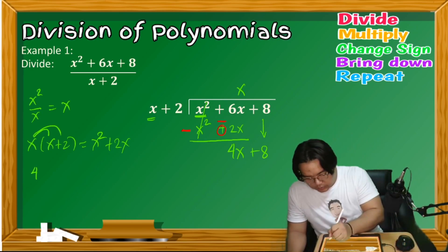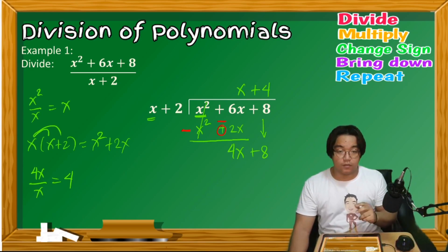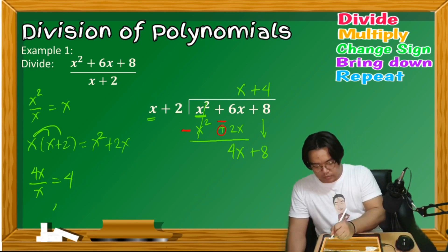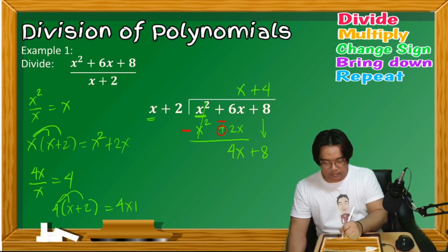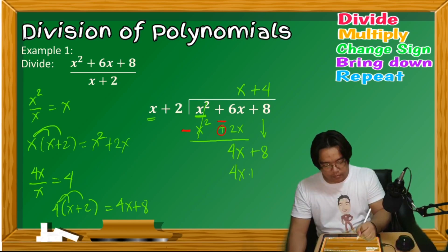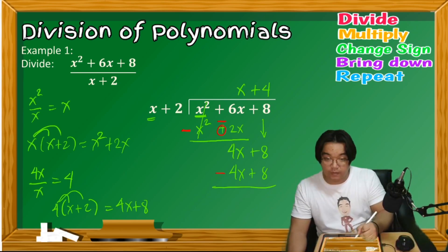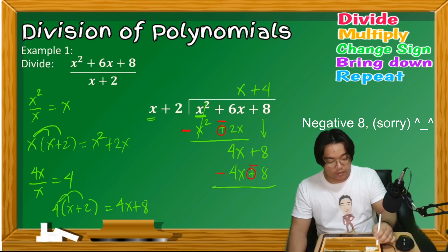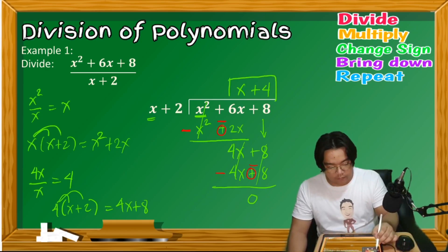We divide 4x by x to get 4, aligned on top of the constant 8. Step 2: multiply 4 by the divisor x + 2 to get 4x + 8. Change the signs: positive 4x becomes negative 4x, positive 8 becomes negative 8. Adding gives zero, meaning there is no remainder.